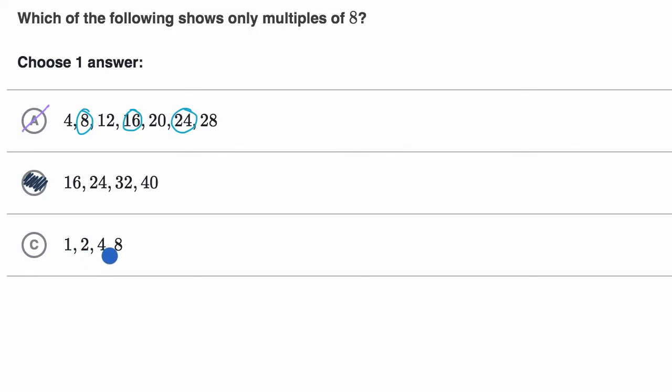And then over here, one, two, four, and eight. Well, these are showing numbers that can be divided into eight without a remainder. You could think of them as factors of eight. You could say, I could multiply one times eight to get eight. I could multiply two times four to get eight. But these are not multiples of eight.